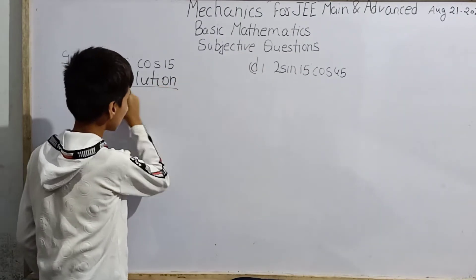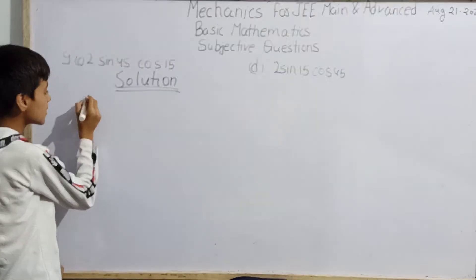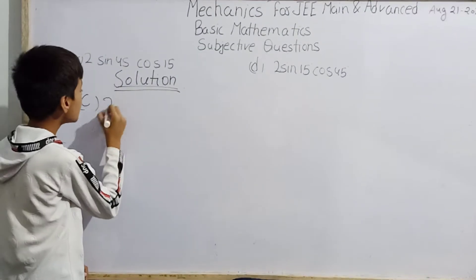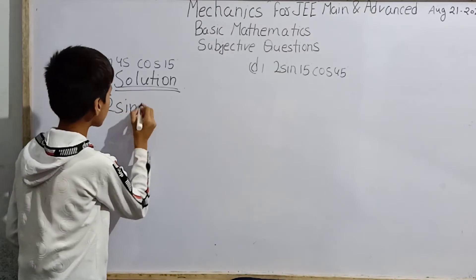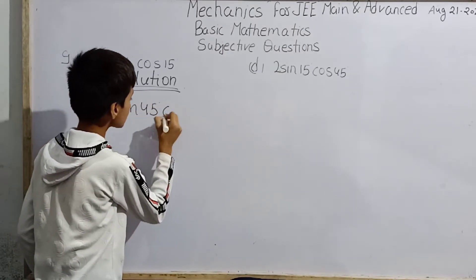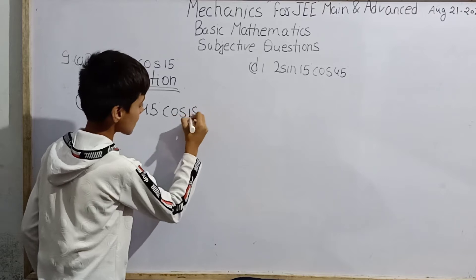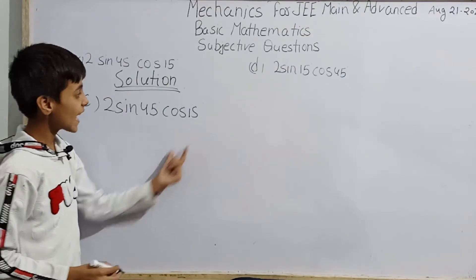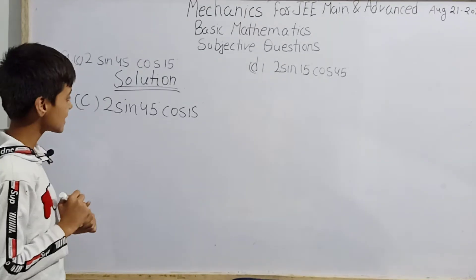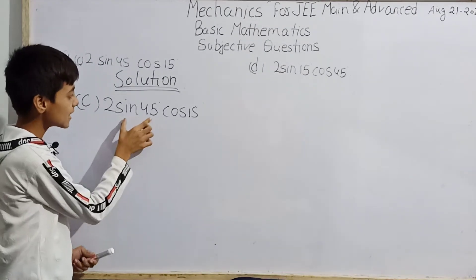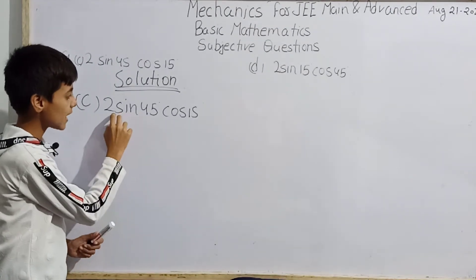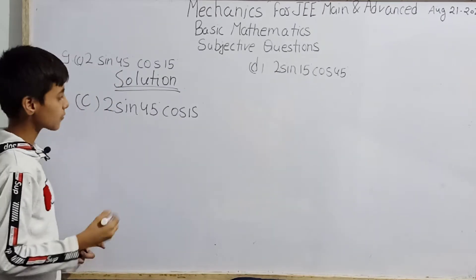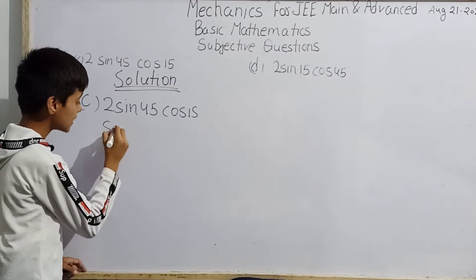So first we'll try to solve C and later will come to D. For C, we have to evaluate 2·sin45°·cos15°. This question is really very easy. We just need to know the values of sin45° and cos15° and we can solve it.